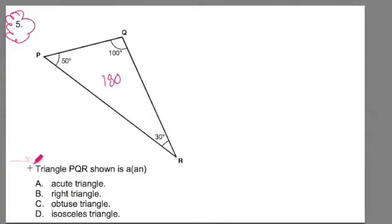We're being asked to identify what type of triangle it is, because the question is like a completing the statement type of question. It says the triangle PQR shown is A, and then we have these options. So really, we just need to know what an acute triangle is, a right triangle is, an obtuse triangle is, and what an isosceles triangle is.